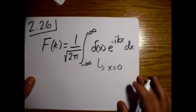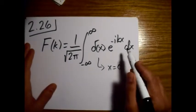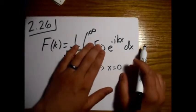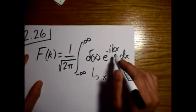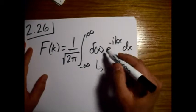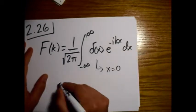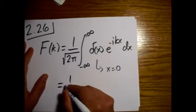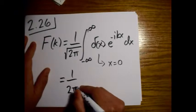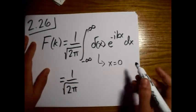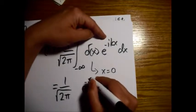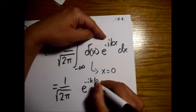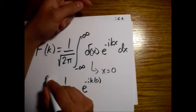And then basically this will turn to 1 when we integrate over it. But it will only pick out that one point. So what this looks like, 1 over the square root of 2 pi. And then when we pick out that one point, we have e to the minus ik, and then a 0 for x, okay?